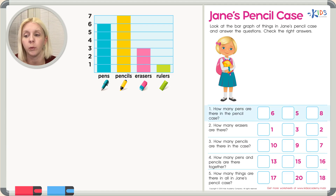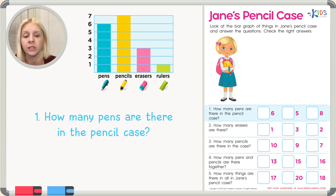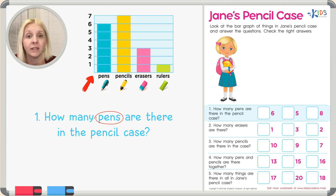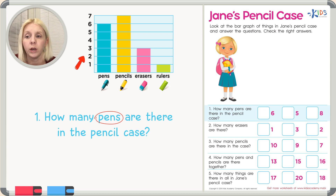Let's answer the questions. Number one says: how many pins are there in the pencil case? I'm going to circle that so I know what I'm looking for. Let's find pins in our graph — that's this first bar. Our bar graph shows it goes all the way up here: one, two, three, four, five, six. It goes all the way up to six. So there are six pins, and we'll put a check next to the number six.